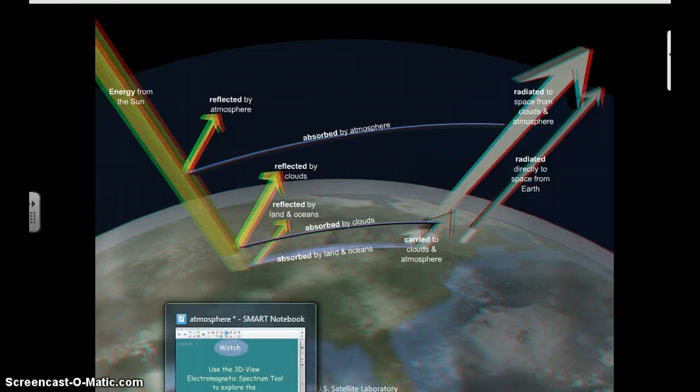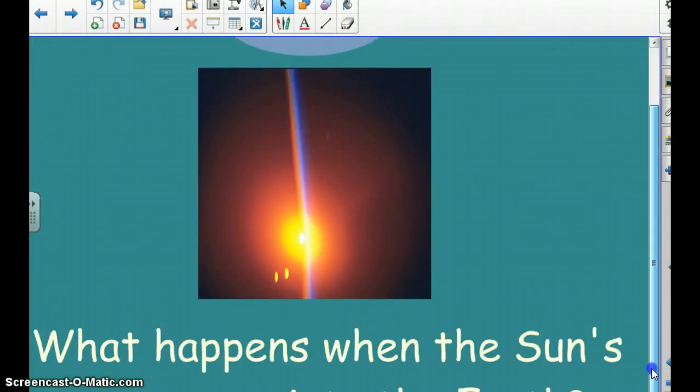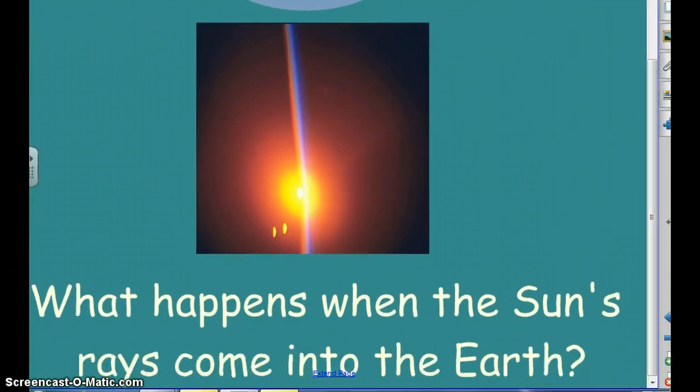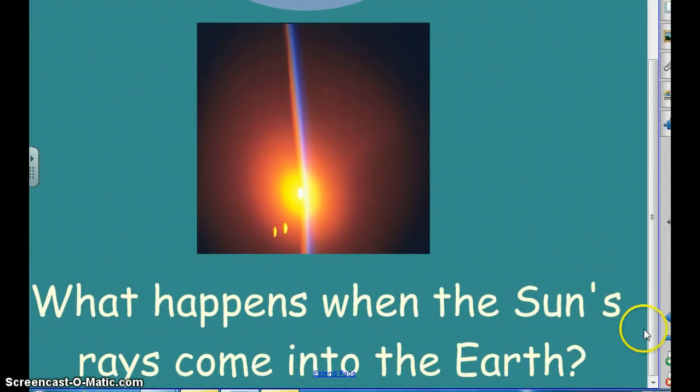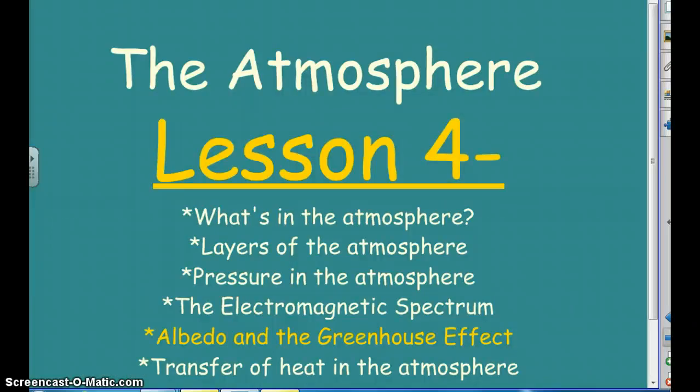The question here asks, what happens when the sun's rays come into the Earth? That's what happens. They either bounce off the clouds, bounce off the atmosphere, or absorb into the land or into the water, and that gives us our temperatures.